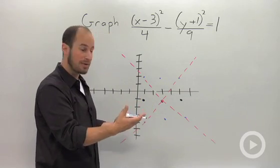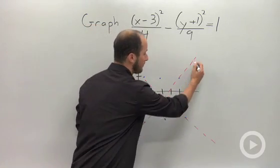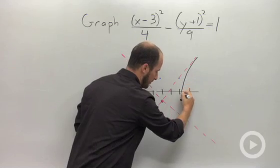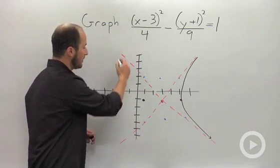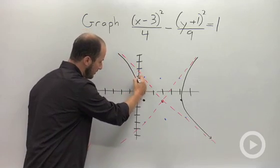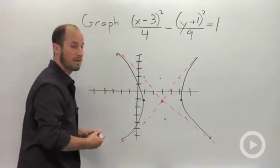And then just filling in the blanks, we know that the graph has to get close to these asymptotes and go through this point. So we have that one half over here, and the other half ends up over here.